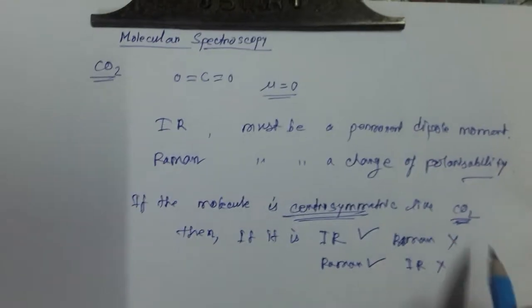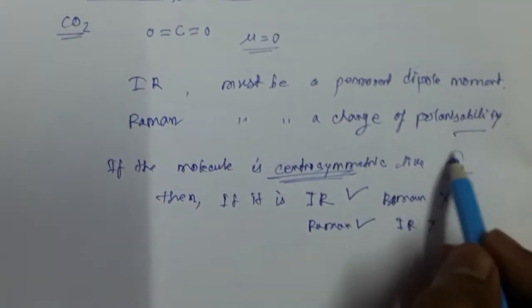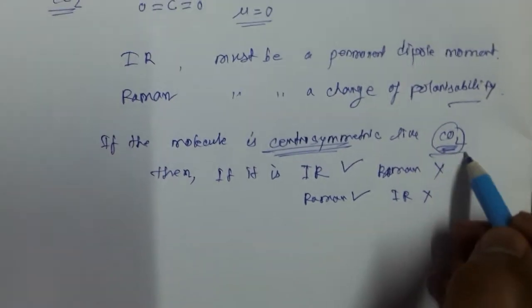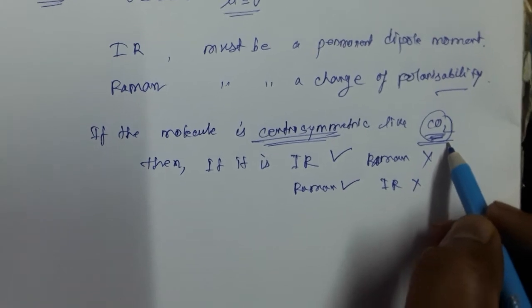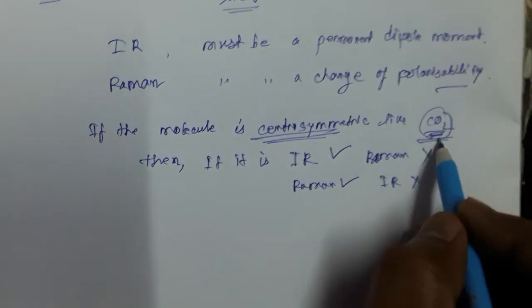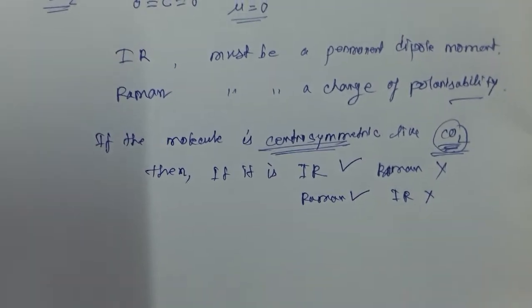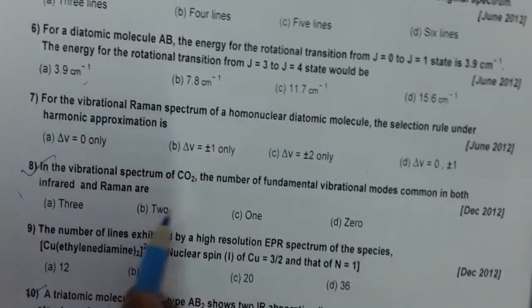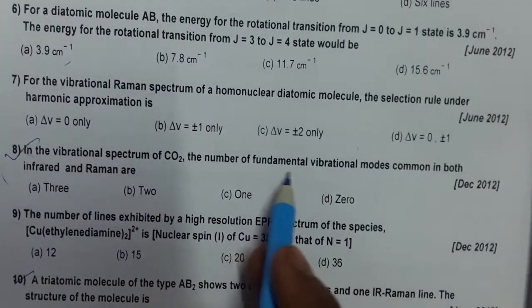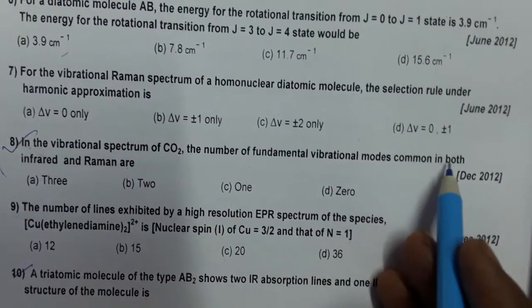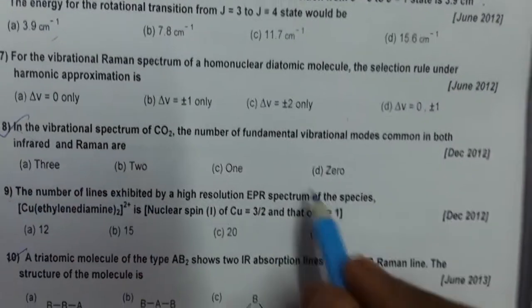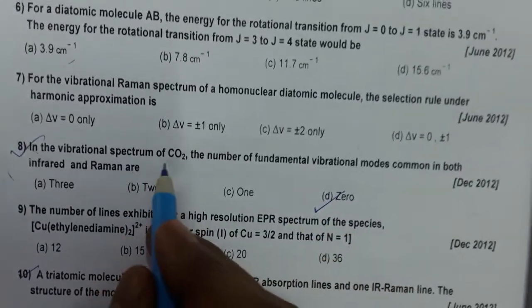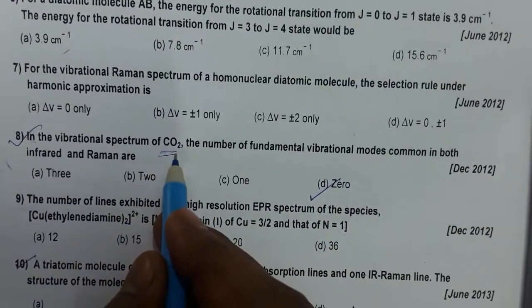Since CO2 is a centrosymmetric molecule, there is no common mode. The number of fundamental vibration modes common in both infrared and Raman for CO2 must be zero.